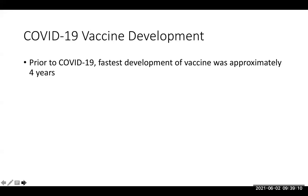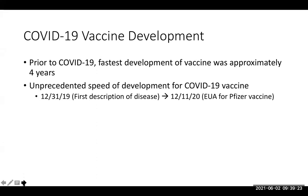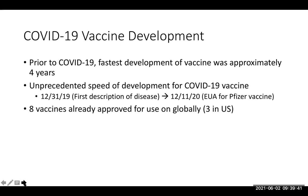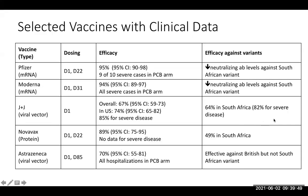Prior to this pandemic, the fastest vaccine developed had been the mumps vaccine, which took about four years. This vaccine was developed much faster than most people predicted. The first description of the disease was end of 2019, and Pfizer was approved for emergency use in the U.S. less than a year later, on December 11th, 2020. Eight vaccines have already been approved for use globally, three in the United States. There's Pfizer, Moderna, J&J, Novavax, and AstraZeneca. Importantly, they all prevent against severe disease, hospitalization, and death quite well, and variant data also generally looks pretty good for most of the vaccines.